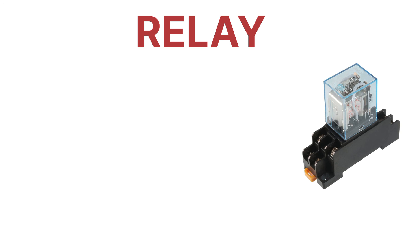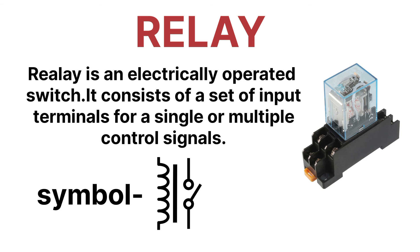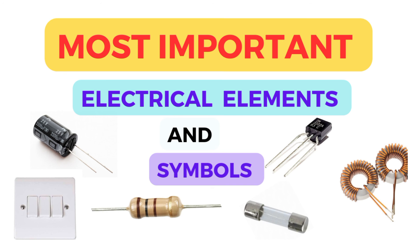Last but not least is a relay. A relay is an electrically operated switch which consists of a set of input terminals for single or multiple control signals. This is the symbol for a relay. That covers all the most commonly used electrical elements in the electrical system. See you in the next video — thanks for watching!